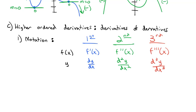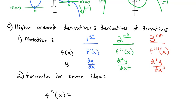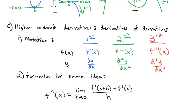That's the notation you might see, but really it just means take the same formula — the same idea. The second derivative, f double prime of x, is equal to the limit as h goes to 0 of f prime of x plus h minus f prime of x, all over h. It's the exact same derivative formula, just applied to the derivative function to calculate the second derivative.